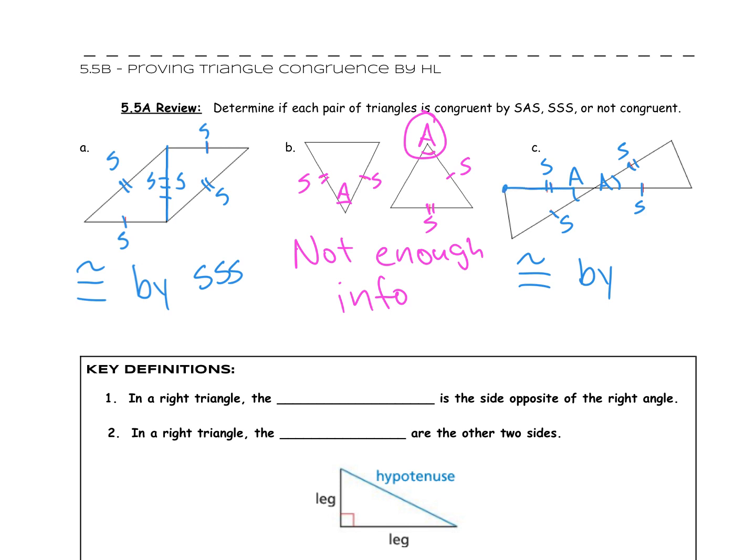They should be congruent by SAS. SAS. We can start on the side. Oh, but it actually has an A. Yeah. The angle for the first one is kind of up here, but we do have a side, then an angle, then a side. And in both of these, it works. So we have A, B, and C, one congruent by SSS, one not enough info, and one by SAS.